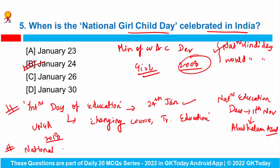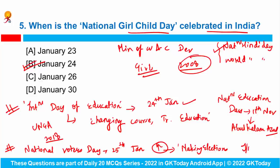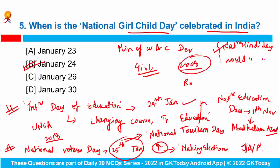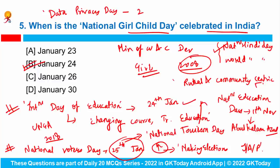The National Voters Day is celebrated on 25th January every year to increase the enrollment of new voters in the country. The theme for this year was 'Making Elections Inclusive, Accessible and Participative.' On the same day, 25th January, we celebrate National Tourism Day, with the theme 'Rural and Community Centric Tourism.' Data Privacy Day is observed on 28th January every year, with the objective to spread awareness on privacy.